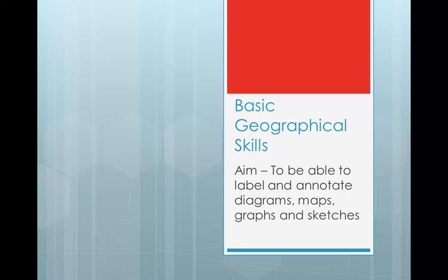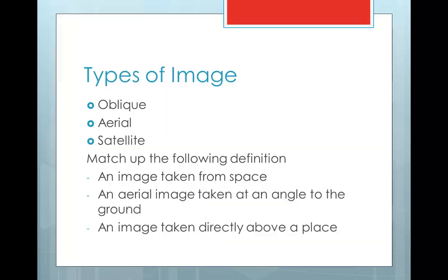We're going to look at labelling and annotating diagrams to start off with. Some of this you're going to have seen before, some of this is going to be new to you and is going to relate to your homework. There are three types of image which you're going to see: oblique images, aerial images and satellite images. You need to be able to understand what each of these is and understand the different terminology so that you can define it if necessary and be able to interpret the images if possible.